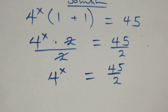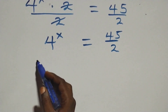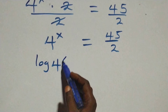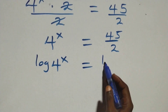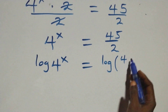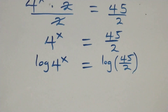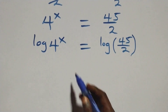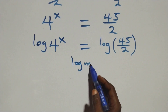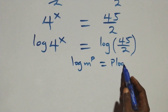Next, we take the log on both sides: log of 4 raised to the power x equals log of 45 over 2. We then apply the power rule of logarithms, where log m raised to the power p equals p times log m.